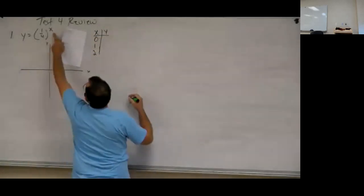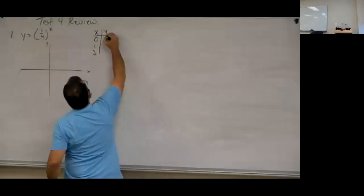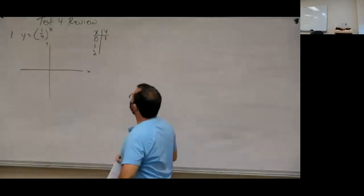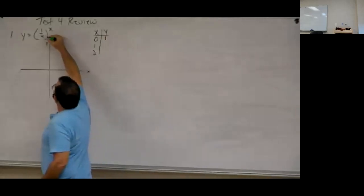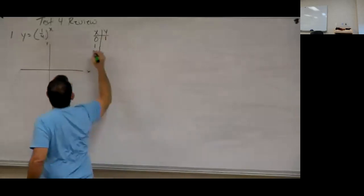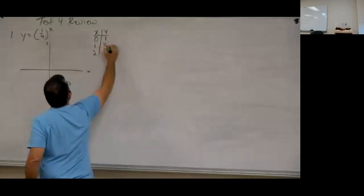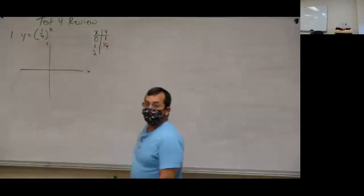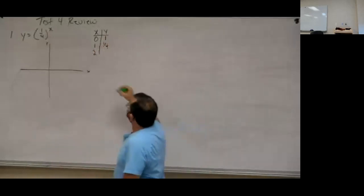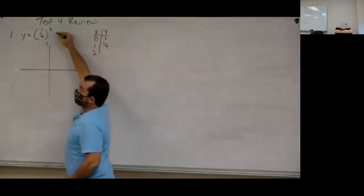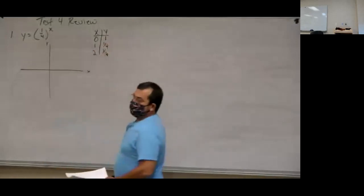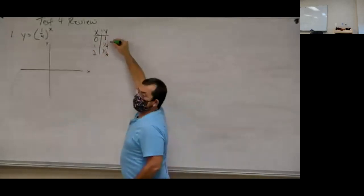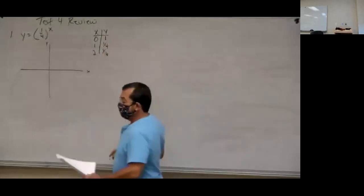When X is zero, anything to the zero power equals one. When X is one, this would be one-fourth to the first power, which is one-fourth. If X is two, one-fourth to the second power gives me one over sixteen. You can see these numbers are getting smaller as the X values get bigger.